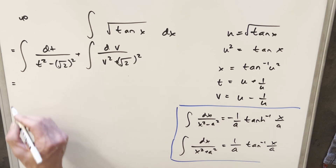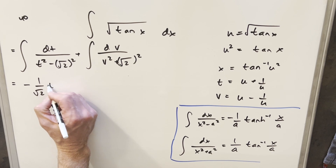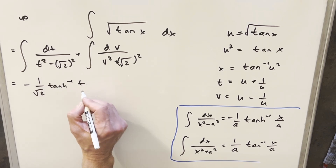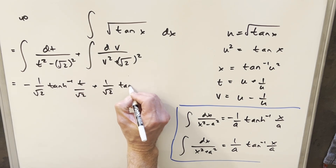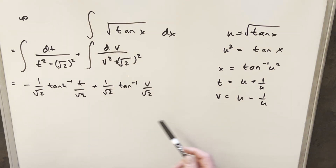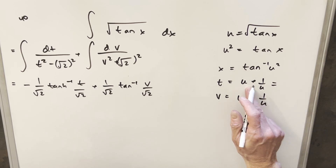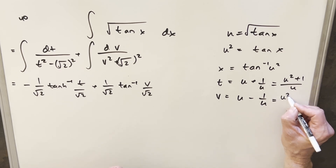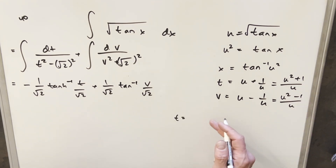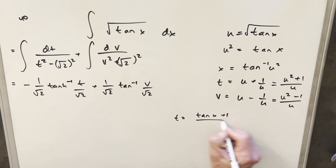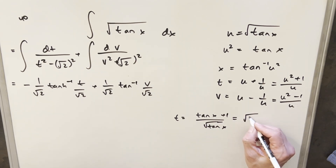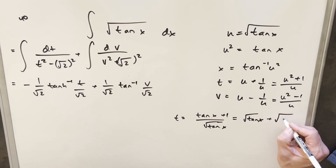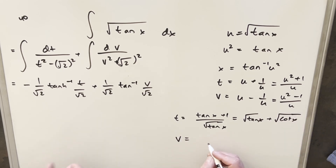So for the first integral we use the hyperbolic inverse formula: minus 1 over square root of 2, times inverse hyperbolic tangent of t over square root of 2. The second integral gives us 1 over square root of 2, arctan of v over square root of 2. Now to finish off, we back-substitute t and v all the way back to x. We can write t as u squared plus 1 over u, and since u squared is tan x, t becomes square root of tan x plus square root of cotangent x. Similarly, v becomes square root of tan x minus square root of cotangent x.